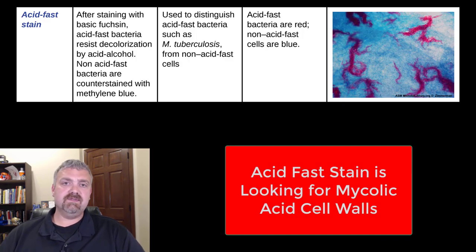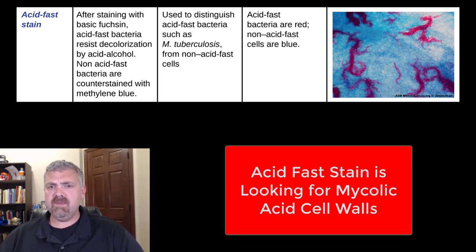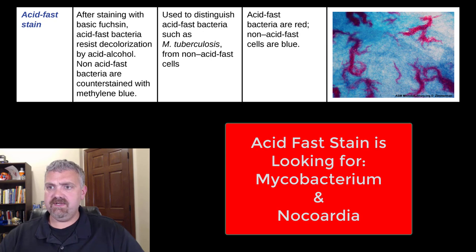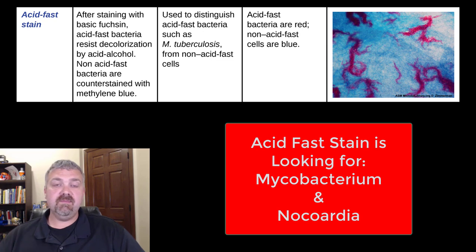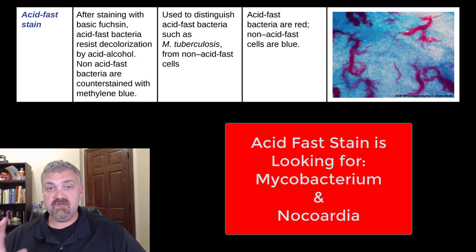The acid fast stain is very important. The key thing I want you to know is which types of organisms we're looking for when we do a stain like this. With the gram stain I do expect you to know the actual stains and the order you use them in, but that's the only one. Acid fast organisms are going to be two types: mycobacterium and nocardia. Here you see an example of Mycobacterium tuberculosis, the causative agent of tuberculosis. The other big mycobacterium is Mycobacterium leprae, which causes Hansen's disease or leprosy.